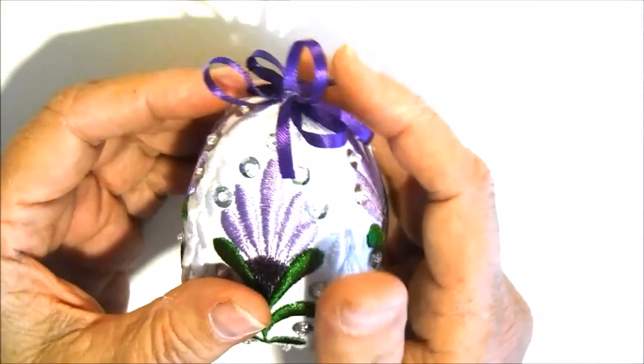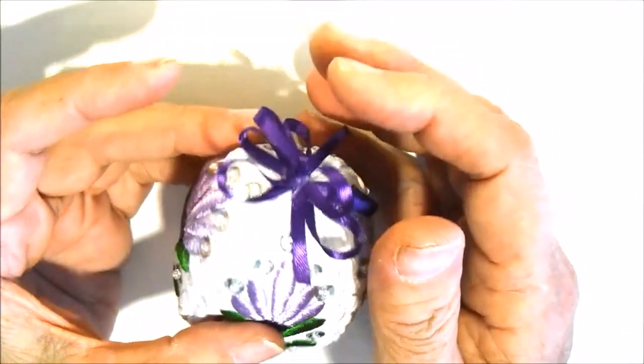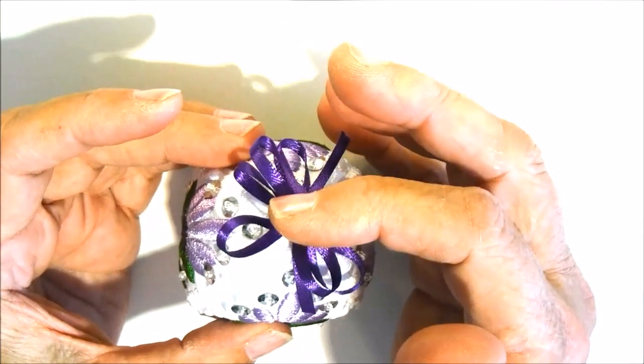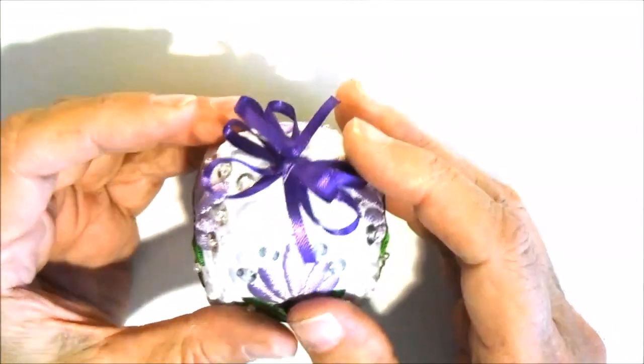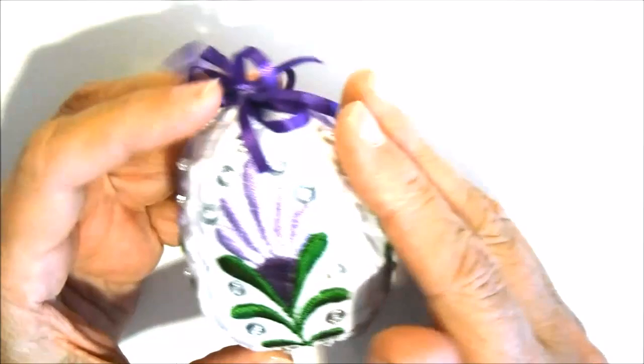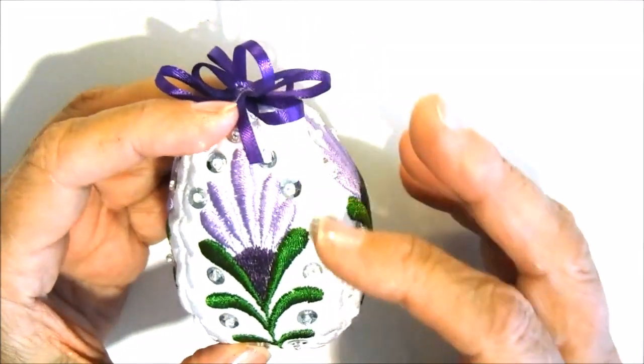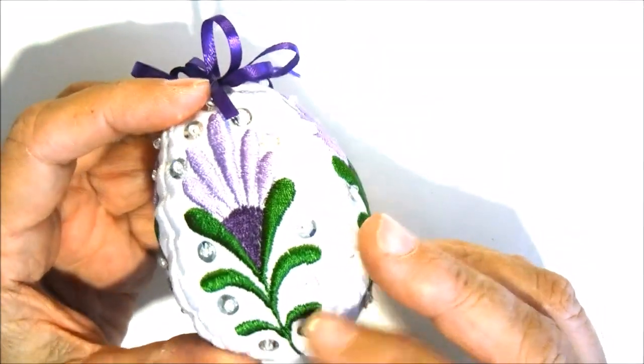The last step is to make a bow and glue it or sew it to the top of the jeweled egg. Thank you for watching this video and don't forget to visit us at www.goldenneedledesigns.com